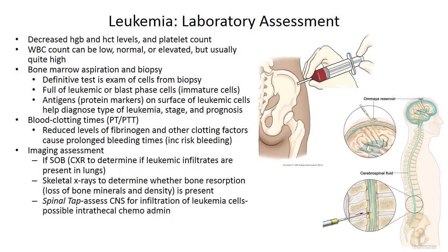Blood clotting times can also be abnormal in leukemia patients. You may see prolonged bleeding times or increased risk of bleeding due to reduced levels of fibrinogen or clotting factors. For imaging, chest x-rays are performed when a diagnosis of leukemia is considered, to help determine whether leukemic infiltrates are present in the lungs, particularly if a patient has cough or shortness of breath.